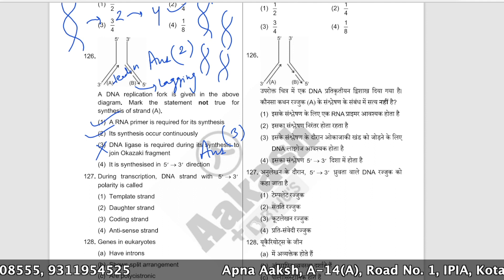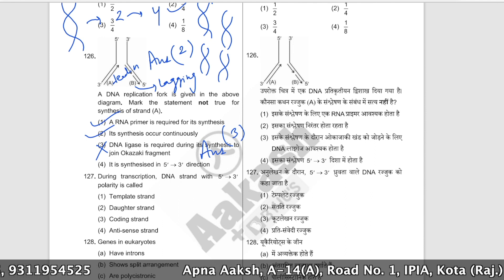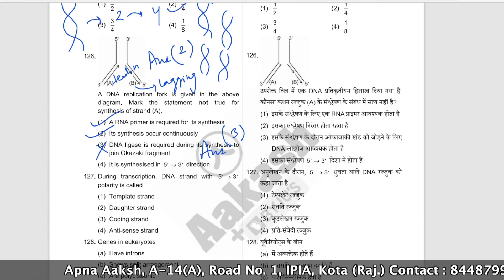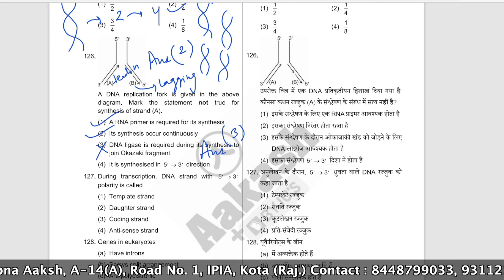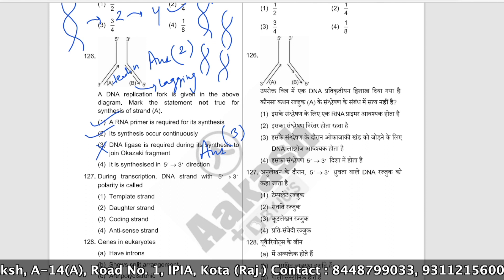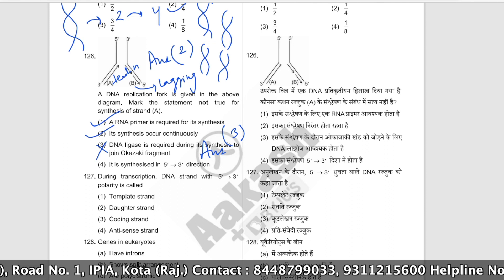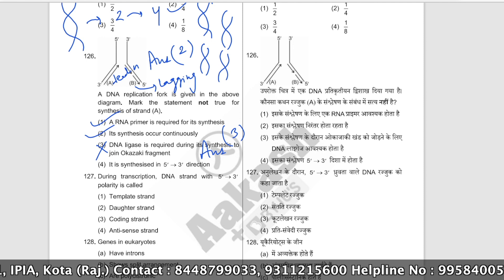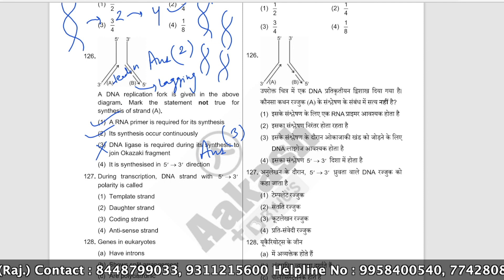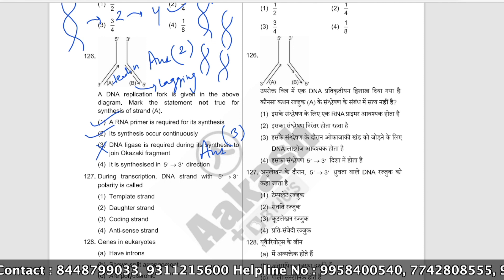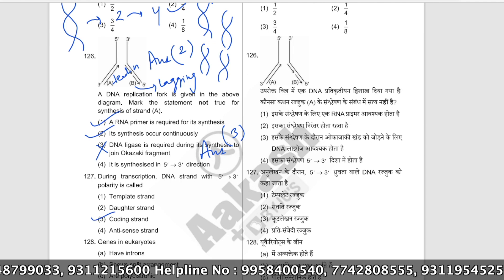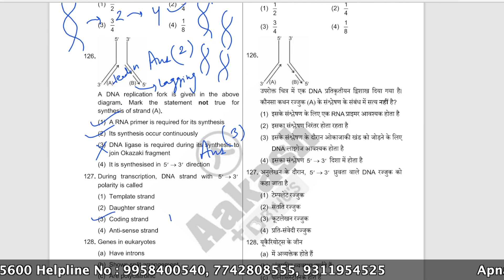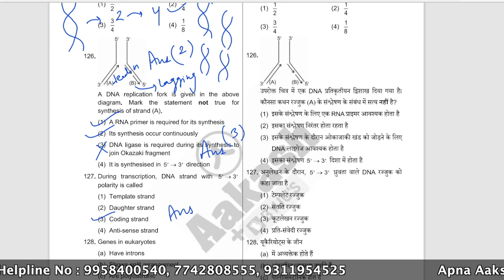During transcription, the DNA strand with 5' to 3' polarity is called the coding strand — because it is not used as template and is not transcribed. The correct answer is option number three.